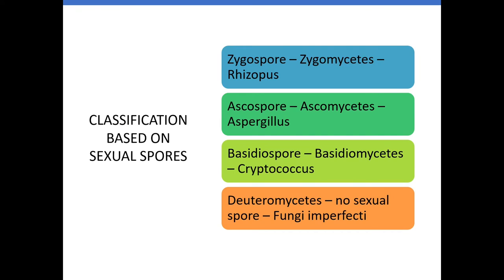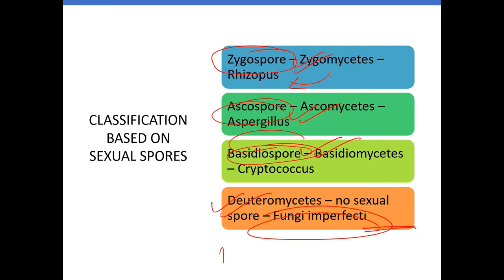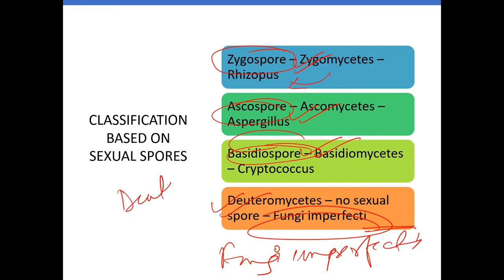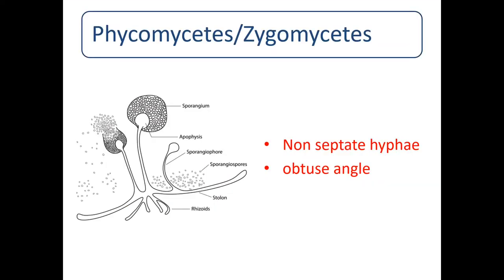Classification based on sexual spores: Zygomycetes — example Rhizopus, sexual spore is zygospore. Ascomycetes have ascospores. Basidiomycetes have basidiospores. Deuteromycetes have no sexual spores and are also known as Fungi Imperfecti.